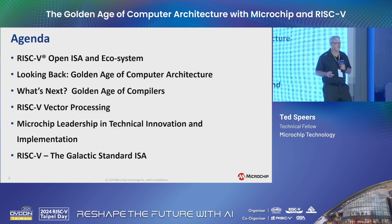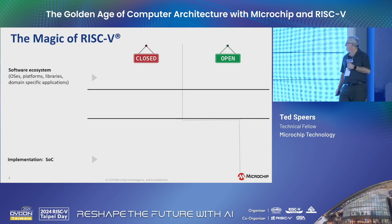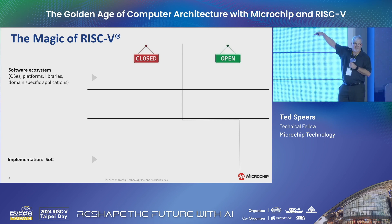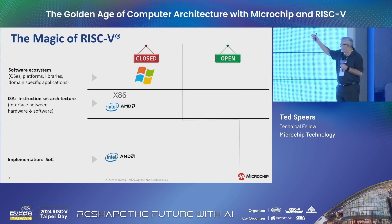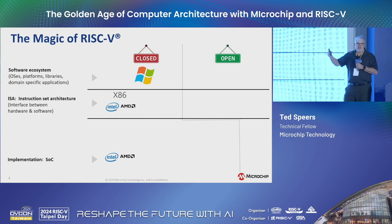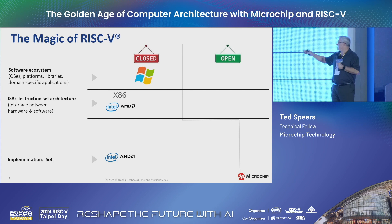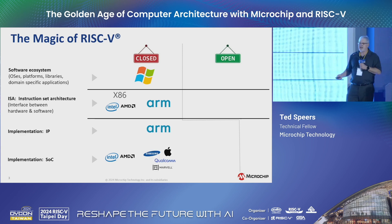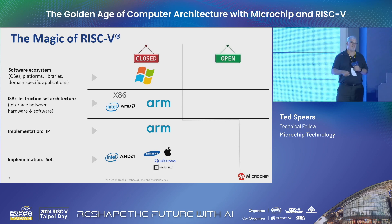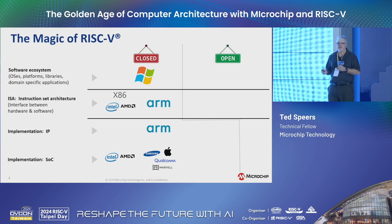This slide shows how I view the ecosystem. You can have closed or proprietary, and open, and then you have the software ecosystem on the top and the hardware implementation at the bottom. The ISA is the contract between the hardware and the software. The whole PC era was completely proprietary — Windows, Intel, AMD. Intel controlled the ISA and the SOC. ARM made a proprietary ISA but did something different — they said let's sell IP, enabling lots of people to make implementations with the ARM ISA.